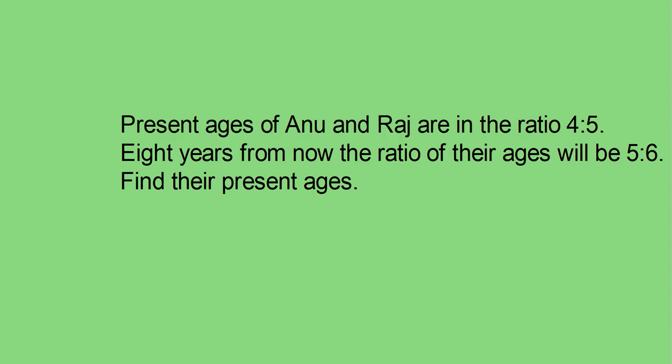Now let us discuss a word problem. The present ages of Anu and Raj are in the ratio 4:5. Eight years from now, the ratio of their ages will be 5:6. Find their present age. Here two persons are there — Anu and Raj — and their present ages are in the ratio 4:5. The condition given is 8 years from now. Now let us make a table on this.